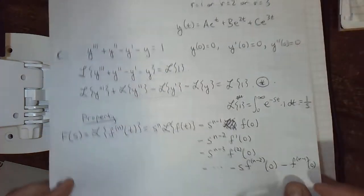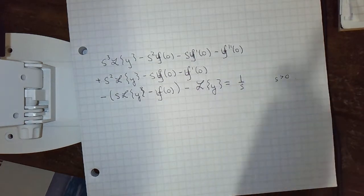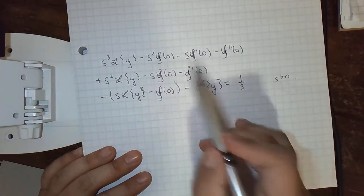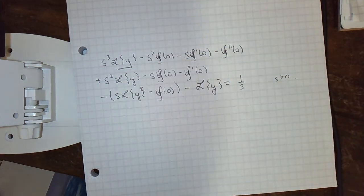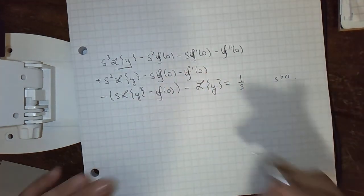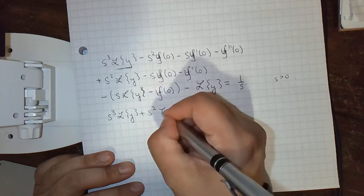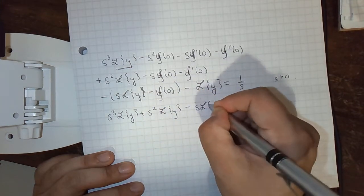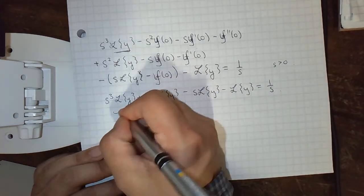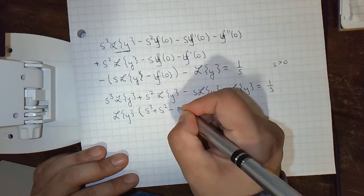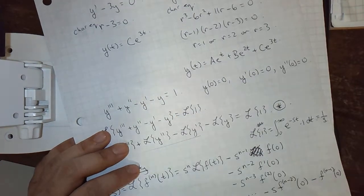Now I've said all the initial condition terms are 0, so they all drop off. If they weren't 0, you could have more polynomials here, but notably they would still just be polynomials — if y of 0 was 3, it would just be 3s squared. So what we see is we have this mysterious L{y}, and other than that we just have polynomials, which means we can solve this. Simplifying: s cubed L{y} plus s squared L{y} minus s L{y} minus L{y} equals 1 over s. So we can factor out L{y}: s cubed plus s squared minus s minus 1 equals 1 over s. Note this is actually the characteristic equation with s instead of r of the original homogeneous differential equation — this will always be the case.